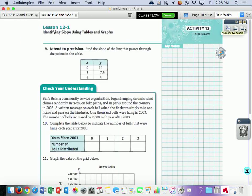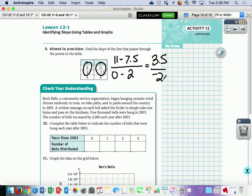All right. Find the slope of the line that passes through the points on the table. Okay. So we're going to do 11 minus 7.5. Okay. 0 minus 2. 11 minus 7.5 is 3.5, I believe. Let me double check with my calculator. Yep. 3.5 over negative 2. 3.5 divided by negative 2 is going to be negative 1.75.